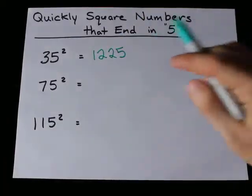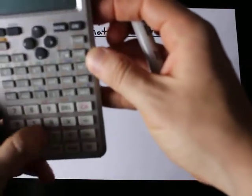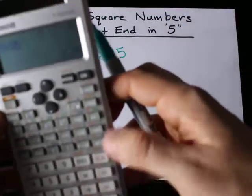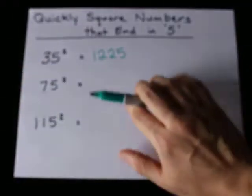So I write down 12 and then I just add 25 to the end. 1225, where's my calculator? Let me prove to you that this works. 35 times 35 equals 1225. What a beautiful system.